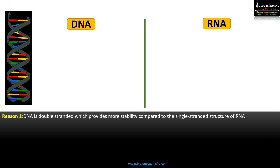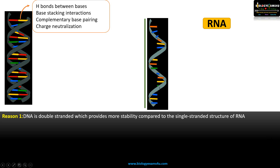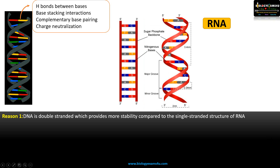Reason number one: DNA is double-stranded, which provides more stability compared to the single-stranded structure of RNA. This is DNA which is double-stranded, and this is RNA which is single-stranded. The first way this double-stranded nature contributes to stability is through hydrogen bonds between the bases. In the double helical structure, nitrogenous bases are joined by hydrogen bonds, and these hydrogen bonds provide stability.